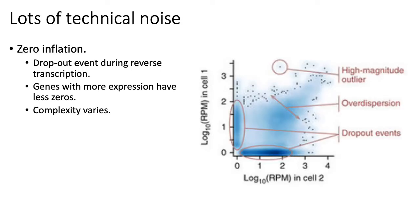One of the most prominent features of single cell RNA-seq data compared to bulk is the presence of zero inflation. Zero inflation refers to the fact that when you look at your data table that tells you how often each gene is detected in each cell, you can actually see a ton of zeros in this table.